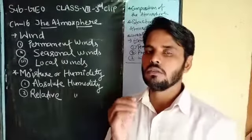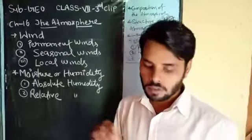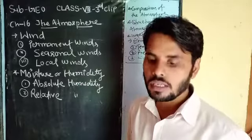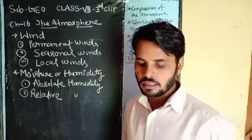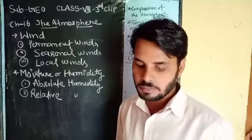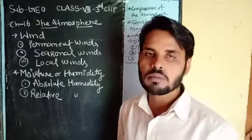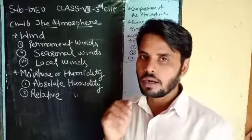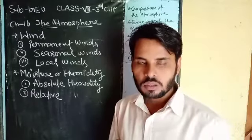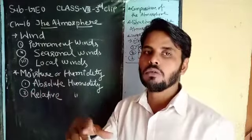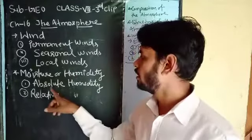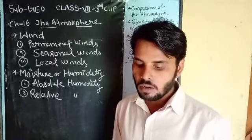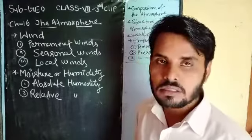Humidity दो तरह की होती है: absolute humidity and relative humidity। Absolute humidity refers to the total amount of water vapor present in a given volume of air, and it is expressed in number of grams of water per cubic centimeter। Air में water vapor का जो कुल मात्रा होता है, उसी को absolute humidity कहा जाता है। इसे measure करने का unit है — grams of water per cubic centimeter।